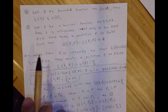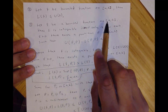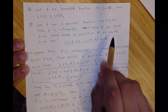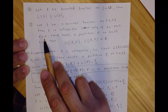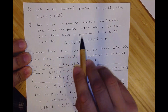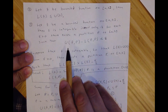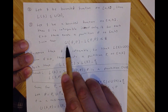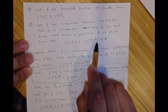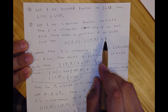The other property I will show in this video is: let F be a bounded function on the closed interval [a,b]. Then F is integrable if and only if for each epsilon greater than zero, there exists a partition P of the interval such that the upper sum of the partition minus the lower sum of the same partition is less than epsilon.